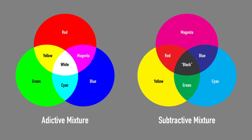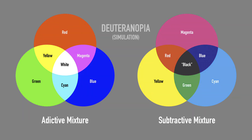Deuteranopia — common. Called deuteranomaly or anomalous trichromacy, it is the absence or deficiency of cones sensitive to intermediate waves — yellow and green — resulting in the inability to distinguish red from green. Magenta and cyan are also challenging to identify, and yellow and green are also barely distinguishable.